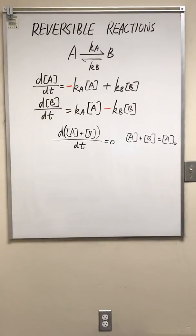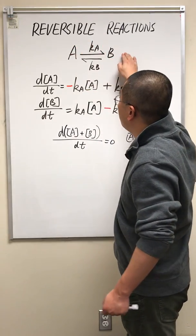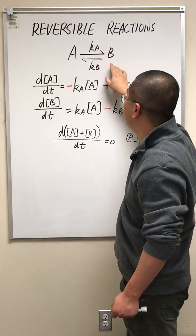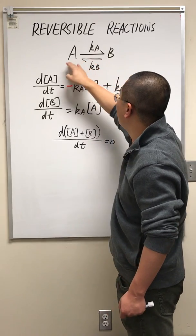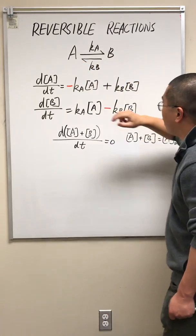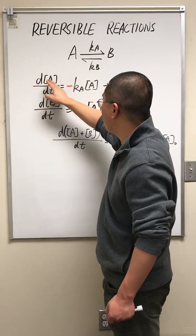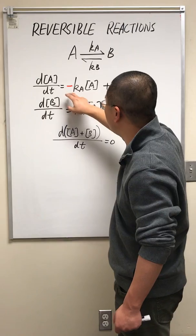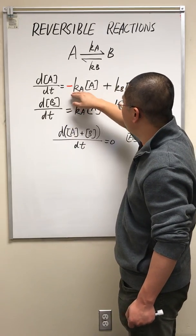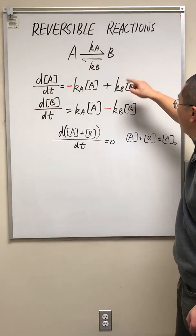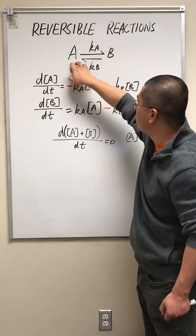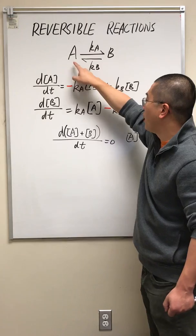I will derive the rate law for reversible reactions. We're looking at two elementary reaction steps: from A to B with rate constant kA, and from B to A with rate constant kB. The change in concentration of A with time is equal to negative kA times A, because A is consumed in the forward reaction, plus kB times B, because A is produced in the reverse elementary reaction step.